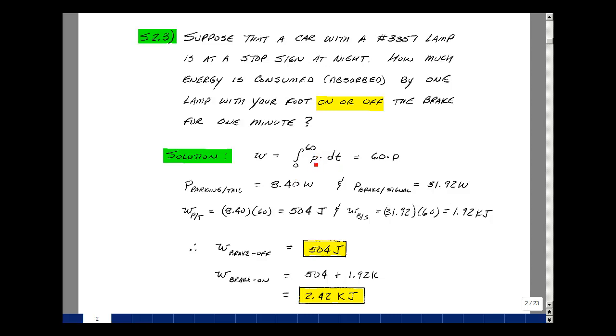If the power is constant, it just comes out in front and we've got the integral of 1 dt, which is just equal to the upper limit minus the lower limit, which would be 60 minus 0 or 60 times the power.